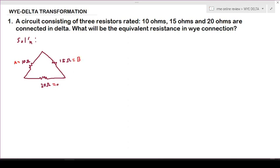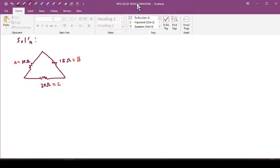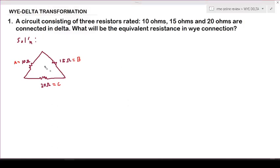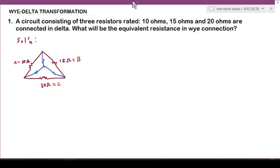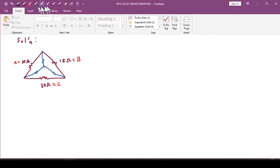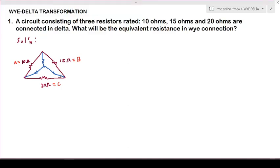We need to transform them into wye, so let's put the wye inside the delta for easy analysis. Let's add variables: this will be X, this will be Y, and this will be Z.